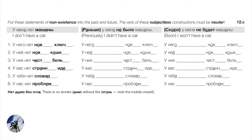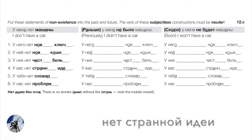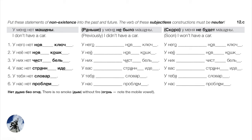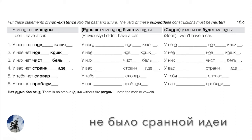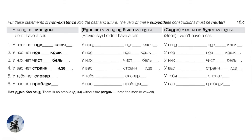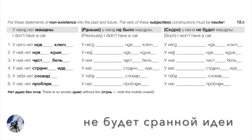Number four — странная идея, a soft feminine noun. You don't have a strange idea: у вас нет странной идеи — remember идея is soft feminine so we can't use ы, we need the soft version и. Past: У вас не было странной идеи. Future: У вас не будет странной идеи.